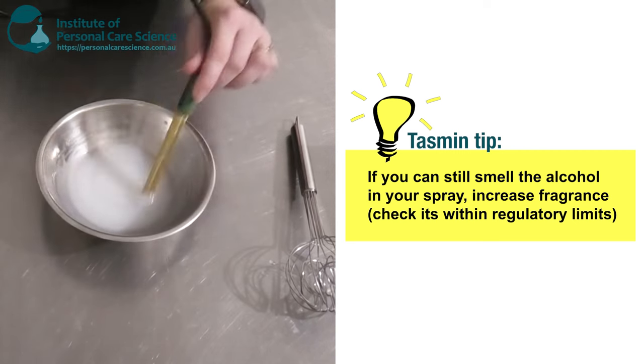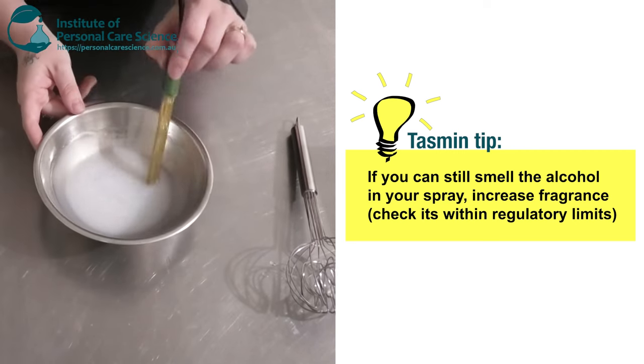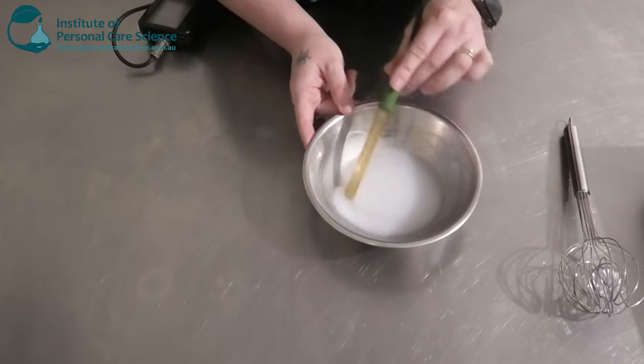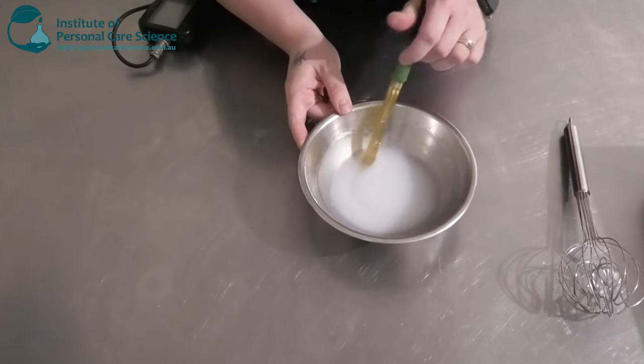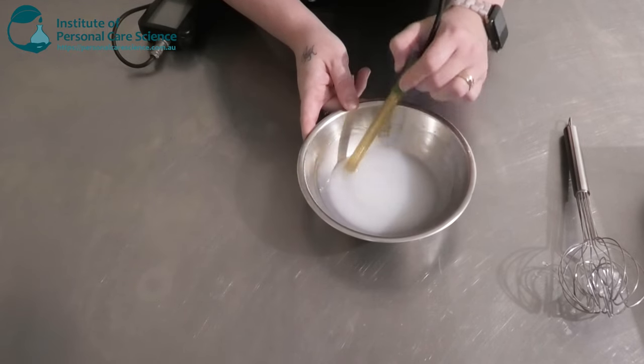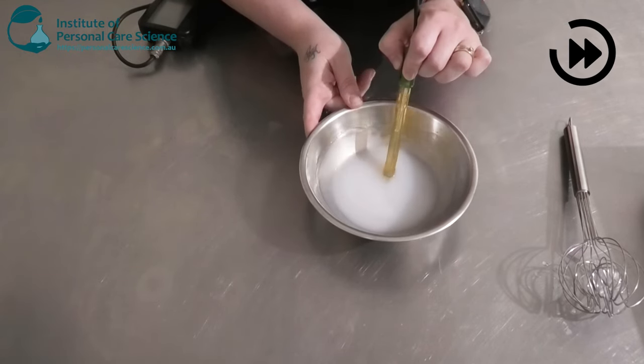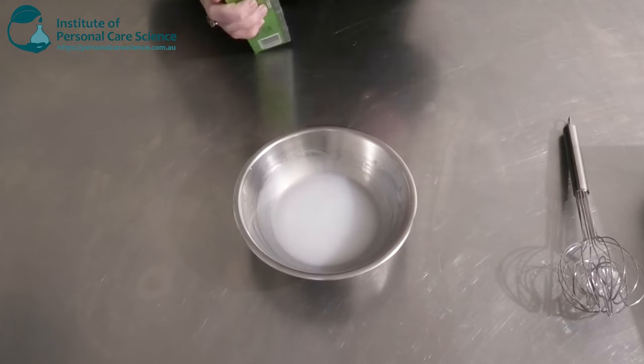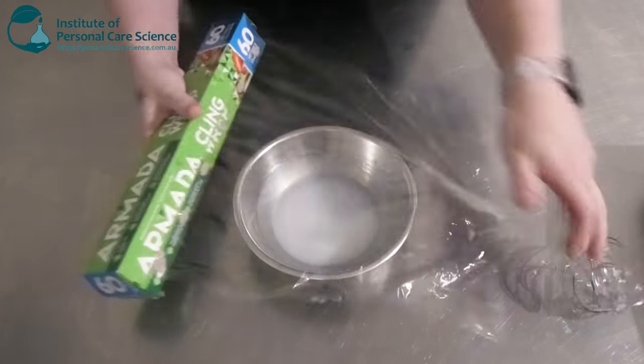Okay last but not least I'm going to check and adjust my final pH. You want it to sit pretty neutral around 5 to 5.5 or 5.3 to 5.8. So as always we're going to let that sit overnight. So I'm just going to cover that.